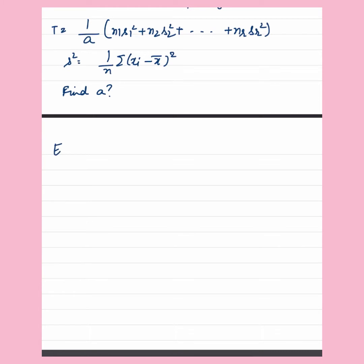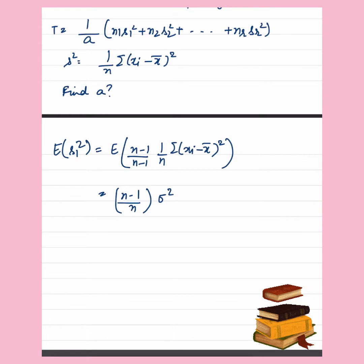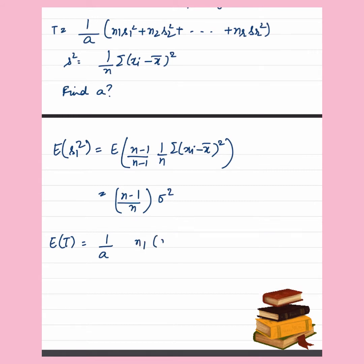Now this is a very easy question. In order to find A, we simply proceed with finding what is the expected value of Si squared. Expected value of S1 squared equals the expected value of (N/(N-1)) times (summation of (Xi minus X-bar)² / N), which is equal to (N minus 1) times sigma squared upon N. Note that Si squared is not an unbiased estimator of sigma squared.